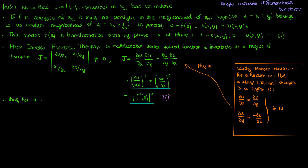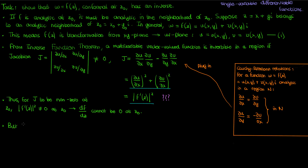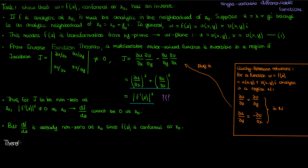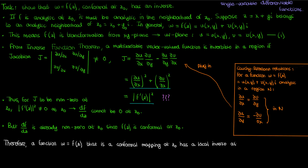For the Jacobian to be non-zero and the function to be locally invertible at z-naught, the modulus of f prime squared must be non-zero, which means df by dz cannot be zero at z-naught. But since f is a conformal mapping at z-naught, we have already guaranteed a non-zero derivative at z-naught, because that is a condition for a conformal mapping. Therefore, if a function is conformal at z-naught, that function automatically has a local inverse at z-naught.